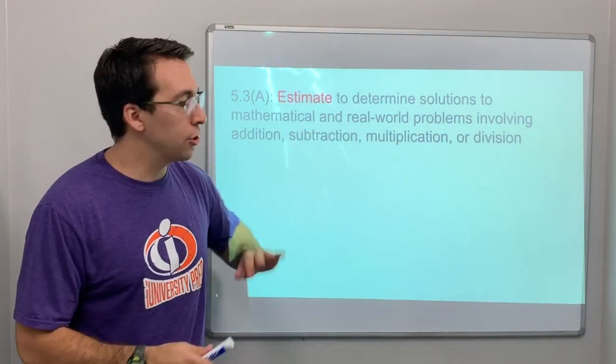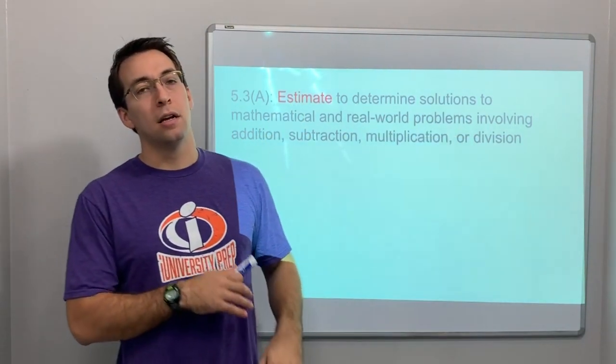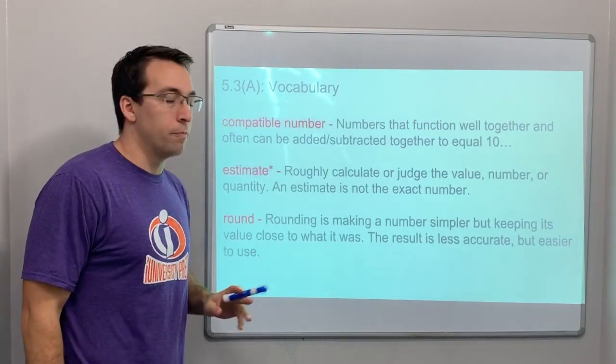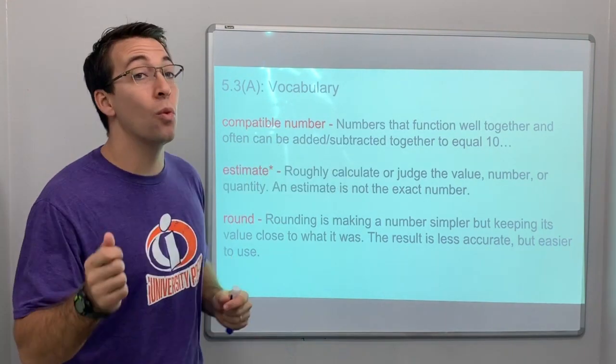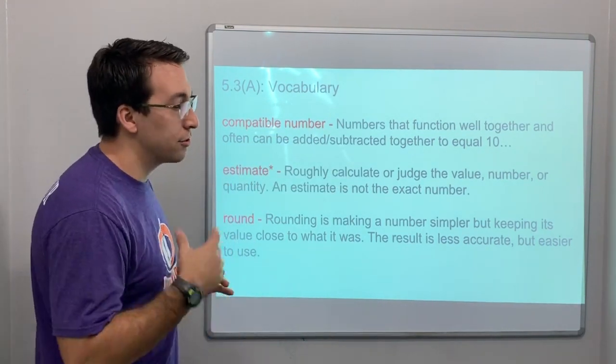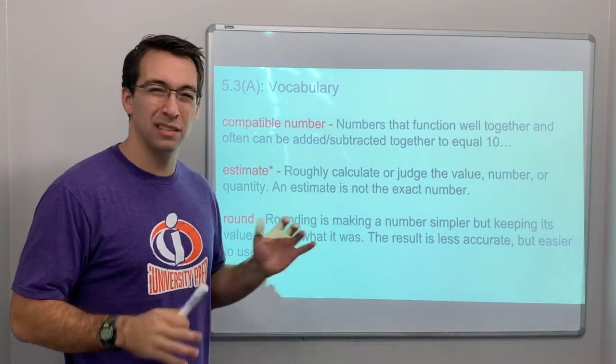So you're going to estimate and then add, subtract, multiply, divide all over the board. You've got to estimate. The vocabulary: compatible numbers—numbers that function well together. Like two and eight are compatible, you add them together they equal ten.